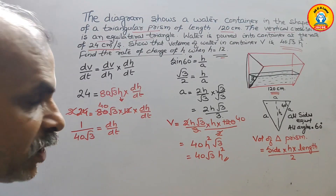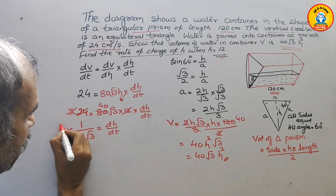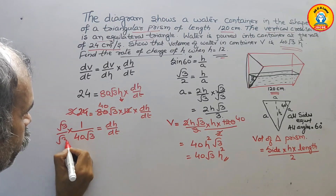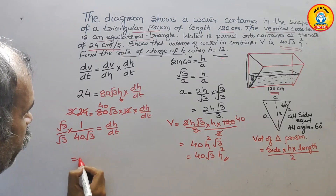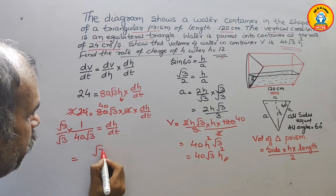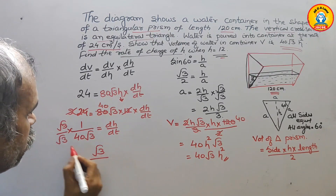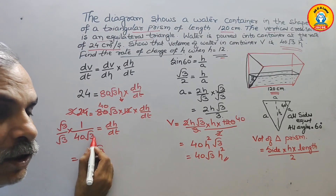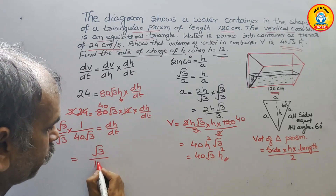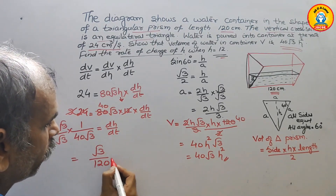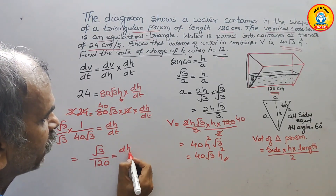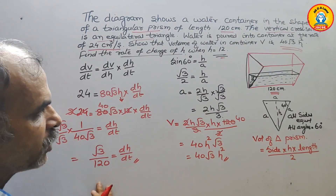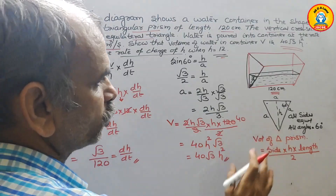Now rationalize 1 / (40√3) by multiplying by √3 / √3. We get √3 / (40 × 3) = √3 / 120. Therefore dh/dt = √3 / 120 cm per second. This is your answer.